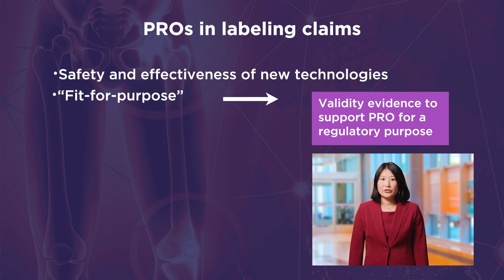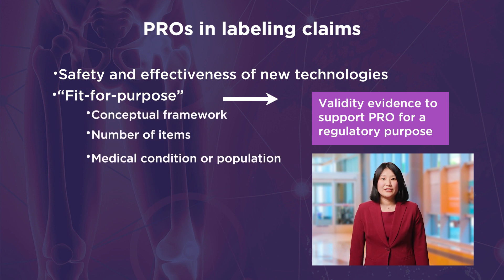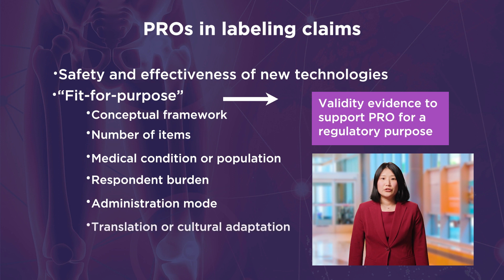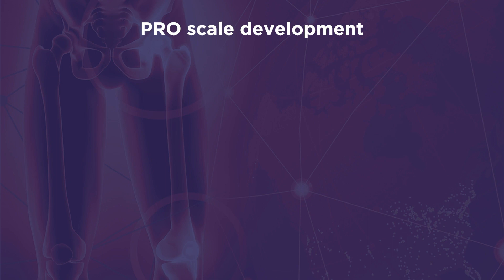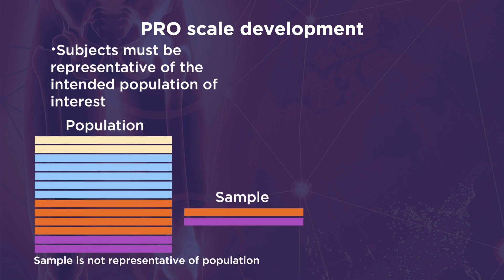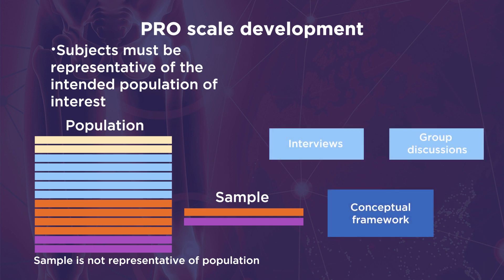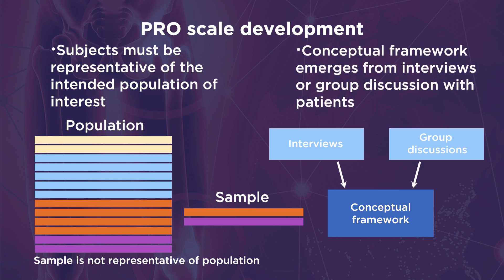This means appropriate thresholds for validation evidence are based on the proposed usage in a clinical trial. Considerations to evaluate fit-for-purpose include conceptual framework, number of items, condition or population for intended use, respondent burden, mode of administration, and cultural adaptation or translation availability. When developing a new PRO, subjects have to be closely representative of the intended population of interest. To generate the context of a PRO, interviews are conducted with patients followed by coding of the transcripts. A conceptual framework emerges with a visual depiction of the interrelations of concepts and items.